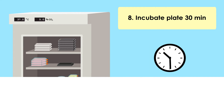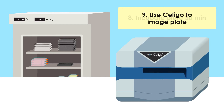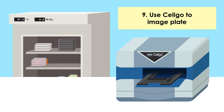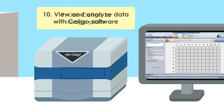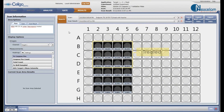Because the Celigo can image and analyze adherent cells, trypsinization is not required. Whole well imaging of 24 wells was captured in 3.5 minutes. The analyzed results are displayed in a plate-based format showing a thumbnail picture and percent of apoptotic cells for each analyzed well.